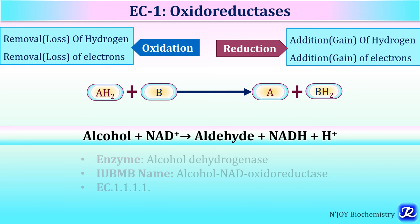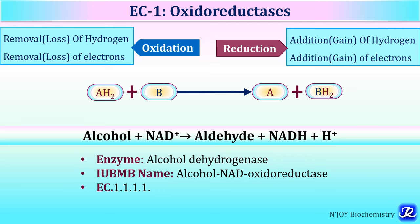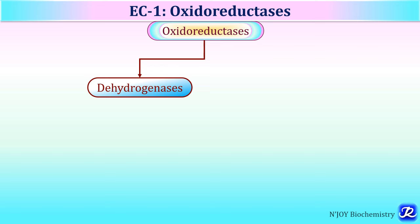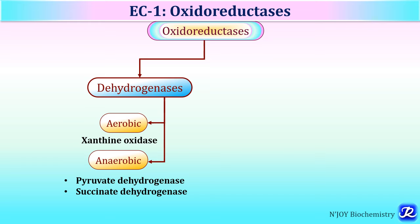This reaction is catalyzed by alcohol dehydrogenase, with the IUBMB name alcohol:NAD oxidoreductase and EC number 1.1.1.1. Oxidoreductases include dehydrogenases, which catalyze removal of hydrogen from substrate. Aerobic dehydrogenases use oxygen as the hydrogen acceptor (e.g., xanthine oxidase); anaerobic dehydrogenases use coenzymes like NAD⁺, NADP⁺, FMN, or FAD (e.g., pyruvate dehydrogenase, succinate dehydrogenase).